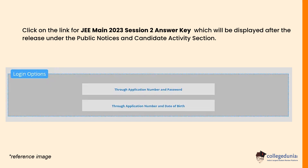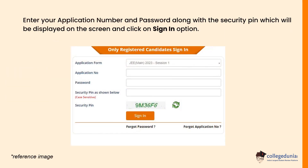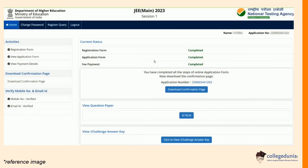NTA will provide two options to check the JEE Main answer key 2023: one using application number and password, and the other using application number and date of birth. To login using the password, enter your application number and password generated during registration along with the security pin, and click on Sign In.